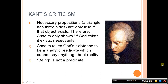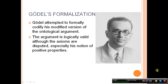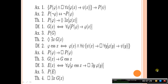The last major interaction with Anselm's ontological argument would be Gödel's formalization of it. Gödel attempted to formally codify his modified version of the ontological argument, and in doing so proved that the argument was valid — he actually accomplished that. The argument is logically valid, although the axioms that Gödel presumes are disputed, most especially his notion of positive properties. And here is the actual proof itself — don't ask me what it says, I have no idea. That's all, thanks for listening.